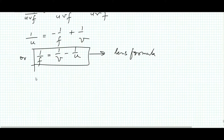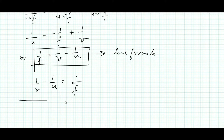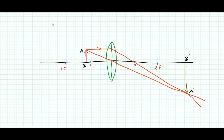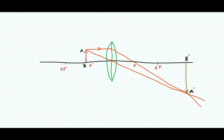The lens formula is written as: 1/v - 1/u = 1/f. This derivation is not compulsory for class 10 students, but is useful for competitive examinations. The size of the image formed by a lens depends upon the position of the object — that is, at what distance object AB is placed in front of the lens.